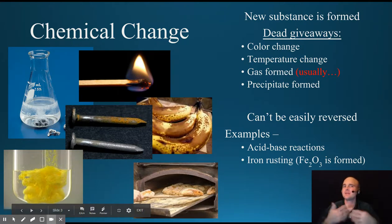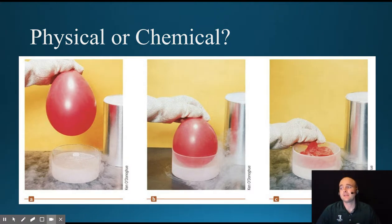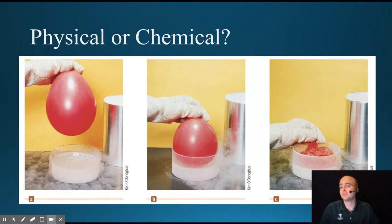We'll cover precipitate formation later in the course. So is this a physical or chemical change? It's a physical change. The gas is actually just getting smaller, and we'll study these later on in the course too. As the gas is decreasing its temperature inside the balloon, it will now decrease its volume. If the balloon was allowed to warm back up, it will warm back up to its normal shape.